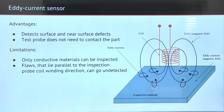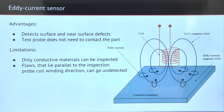The advantages of eddy current sensors are that they can detect surface and near-surface defects, and the test probe doesn't have to touch the object. The limitations are that they can only be used with conductive materials, and flaws which lie parallel to the inspection direction can go undetected.